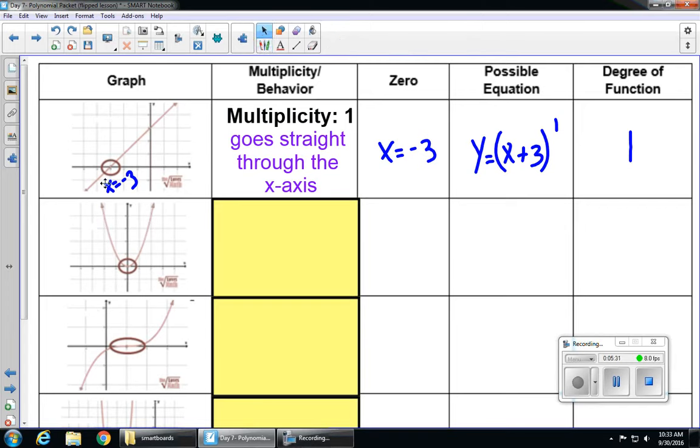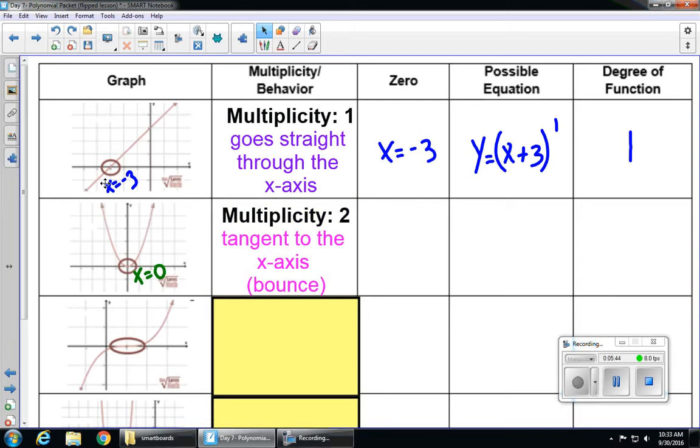Our next graph touches the x-axis at x equals 0, so let's label that. It kind of touches and then bounces and goes right back up. So this is a multiplicity of 2.